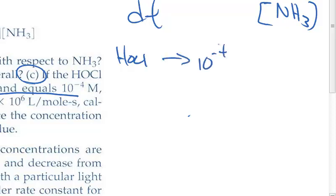at 10 to the minus 4 molar, and we're also given a rate constant equal to 5.1 times 10 to the 6 (not minus 6, but 6) liters per mole per second, calculate the time required.